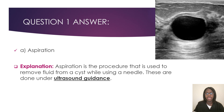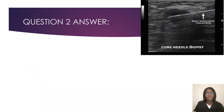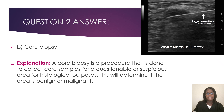Question two: which procedure involves collecting core samples from a suspicious area for histological analysis? Is it aspiration, core biopsy, preoperative needle localization, or stereotactic biopsy? The correct answer is core biopsy. A core biopsy is a procedure done to collect core samples from a questionable or suspicious area for histological purposes. This will determine if the area is benign or malignant.